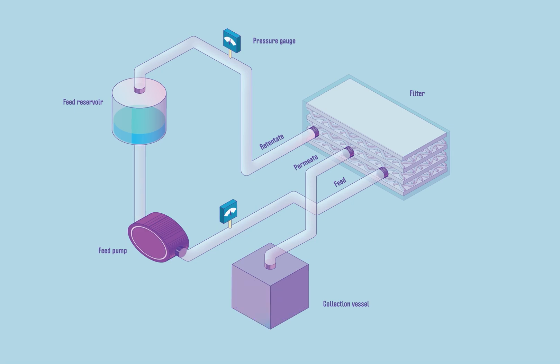The material is fed in from the feed reservoir by a pump and enters the filter via the feed line. Material that does not pass through the membrane is called the retentate and is usually pumped back into the feed reservoir. Material that transits the membrane is called the permeate and can be collected separately in the collection vessel.